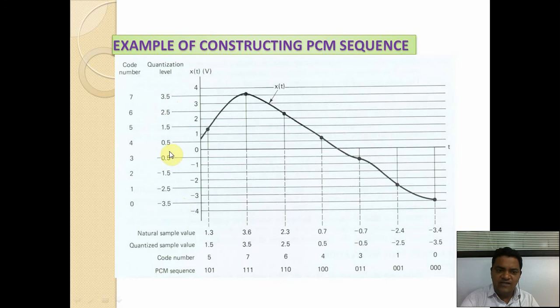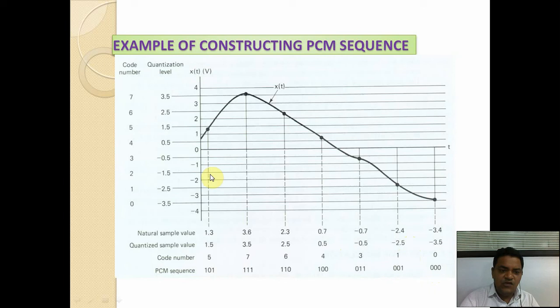Minus 3.5 is assigned code number 0, giving PCM sequence 0 0 0. Minus 2.5 is code number 1, giving 0 0 1. Minus 0.5 is code number 3, giving 0 1 1. Plus 0.5 is code number 4, giving PCM sequence 1 0 0. Plus 2.5 is code number 6, giving 1 1 0. Plus 3.5 is code number 7, giving 1 1 1.